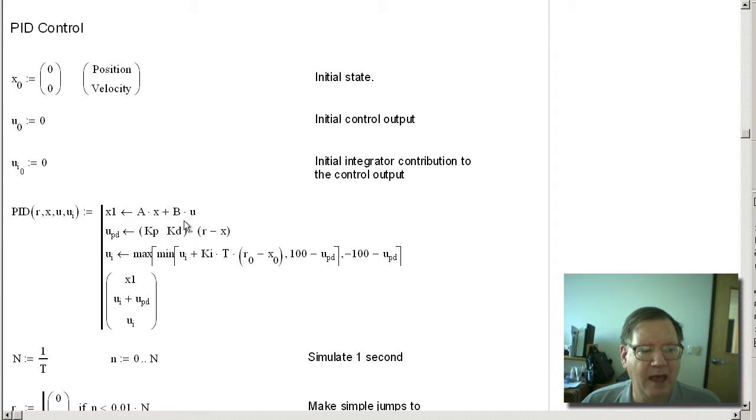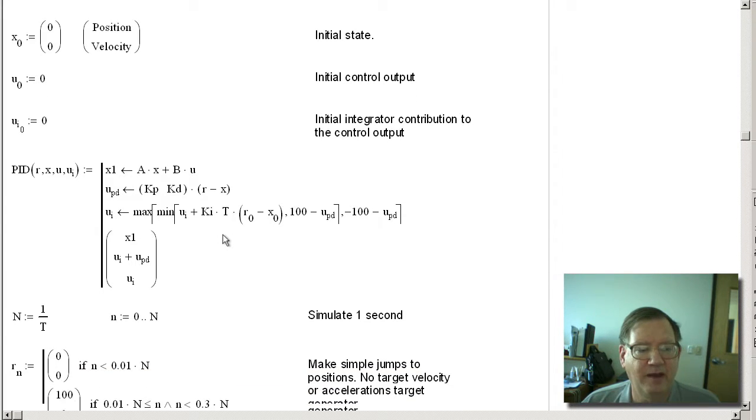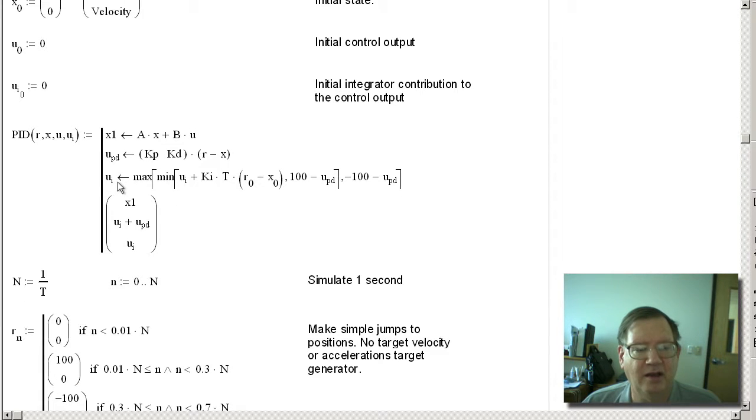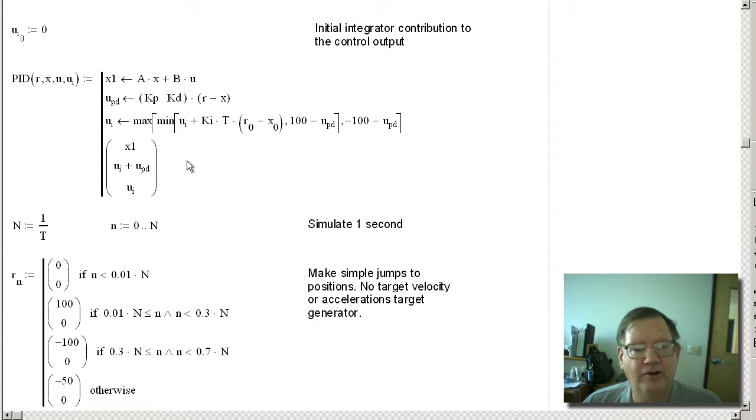And next is the PI control. This updates the state given the current state and the control output from the time before. This computes the proportional and derivative terms of the PID. And then this line updates the integrator and prevents windup by using limits to limit basically plus or minus 100%, minus whatever the output is from the proportional and derivative terms. And that keeps the integrator from winding up.